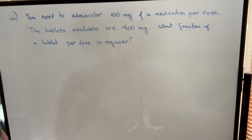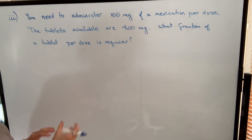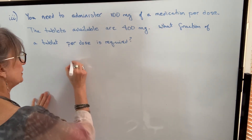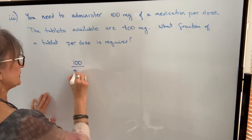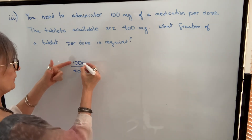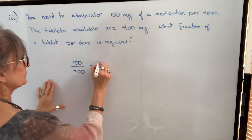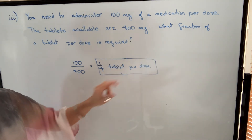Our next example: you need to administer 100 milligrams of a medication per dose, and the tablets available are 400 milligrams in total. What fraction of a tablet per dose is required? Take the amount to administer and divide by the strength of the tablets: 100 over 400. Reduce by dividing numerator and denominator by 100, giving one quarter. So you would administer one quarter of a tablet per dose.